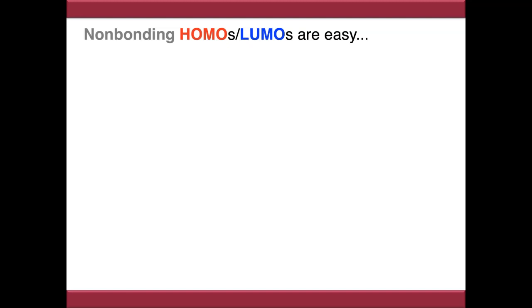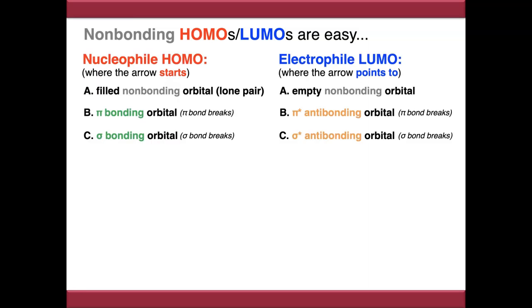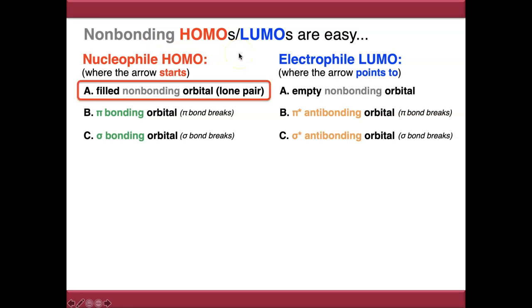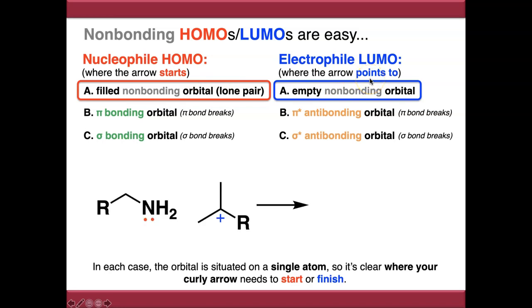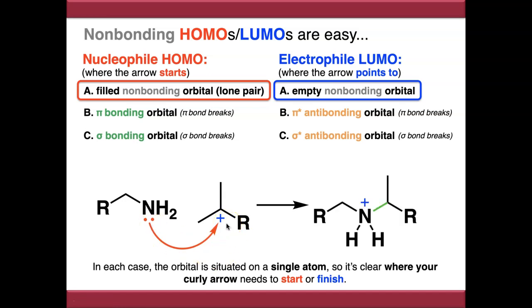In the previous video we discussed what types of orbitals can act as HOMOs and LUMOs, arriving at a system where the nucleophile HOMO and electrophile LUMO are each one of three types. Non-bonding examples are easy to predict because both orbitals are contained on a single atom. For instance, an amine nucleophile with a lone pair on nitrogen reacts with a carbocation electrophile with an empty p orbital on carbon — the arrow starts on nitrogen and points to the positive carbon to give the product.